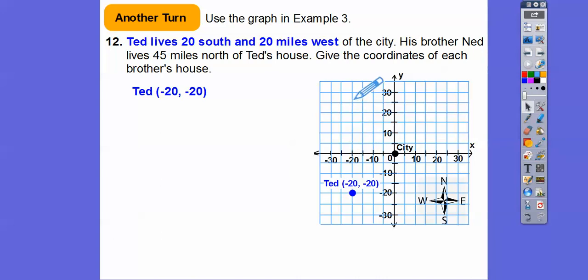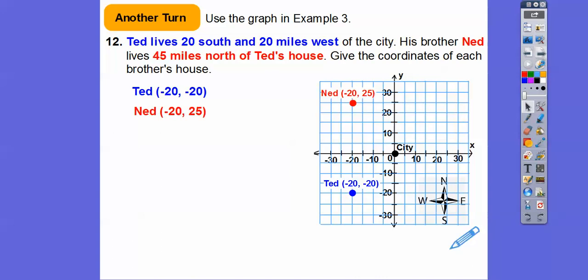There's Ned's house right there — sorry, I was thinking of the last problem. It looks like it's at negative twenty comma twenty-five. So negative twenty, comma, twenty-five.